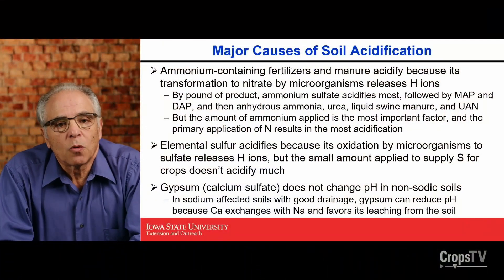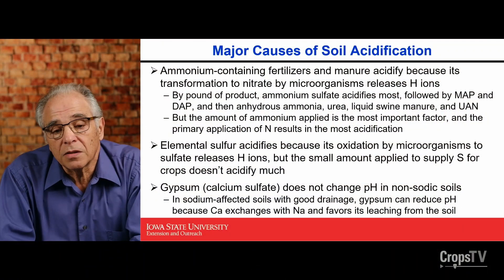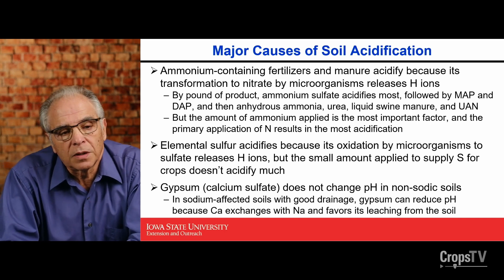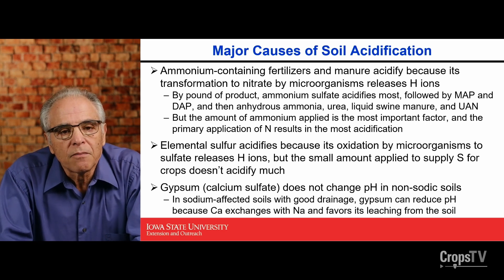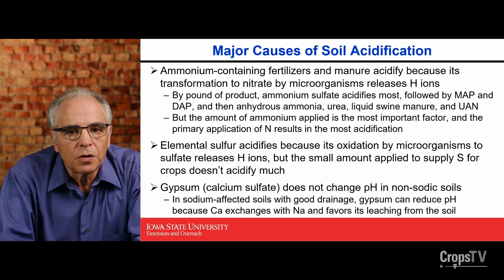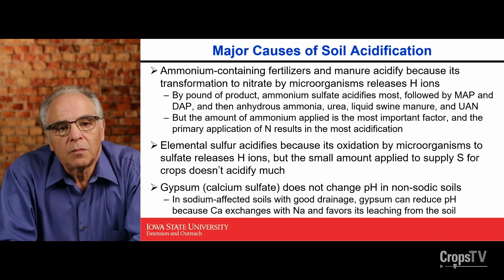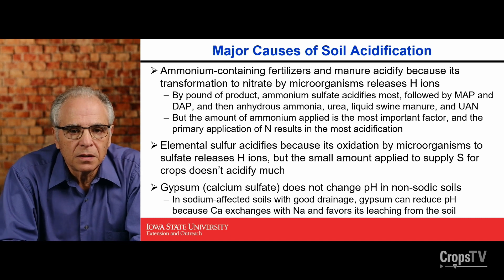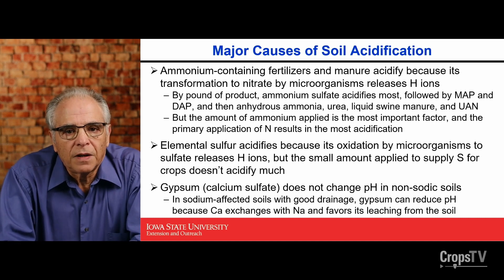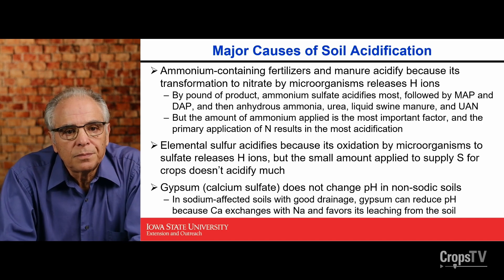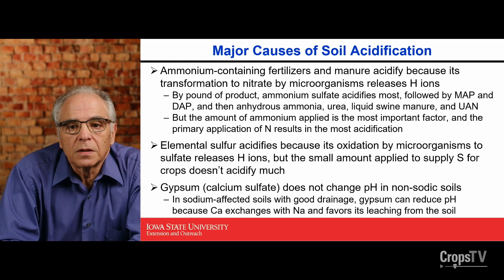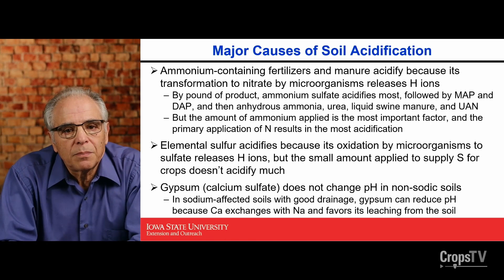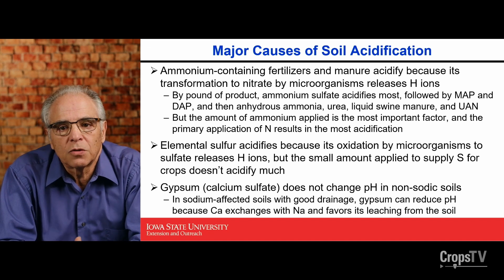We need to remember what are the major causes of soil acidification in the short term — when we are talking in terms of years, 10 years, 20 years. The most important cause is the change of ammonium to nitrate from ammonium-containing nitrogen fertilizers or manure. This acidifies because the transformation releases hydrogen ions to the soil. By pound of product, ammonium sulfate acidifies the most, followed by MAP and DAP, then anhydrous ammonia, urea, liquid soil manure, and UAN.